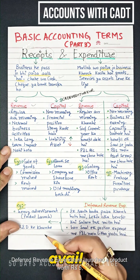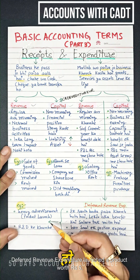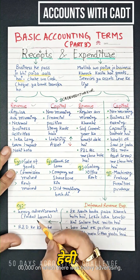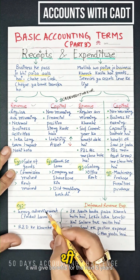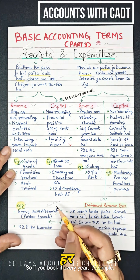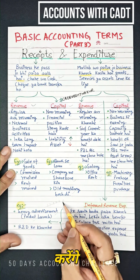Third, deferred revenue expenditure. For example, a product was launched worth Rs 5,00,000 with heavy advertising spend. It will give benefits for the next five years, so the cost is spread and booked every year across those years.